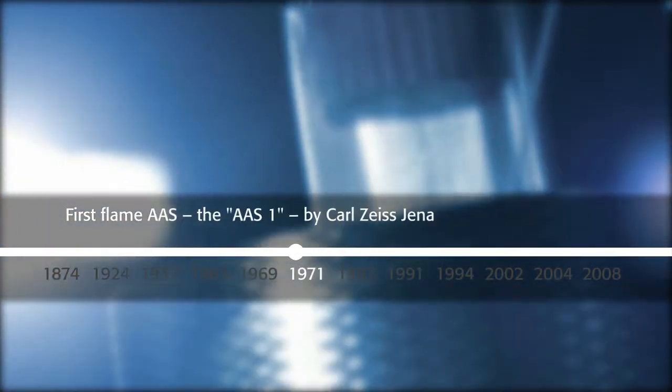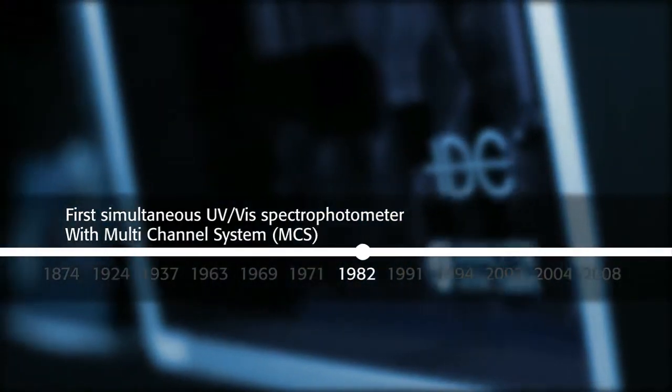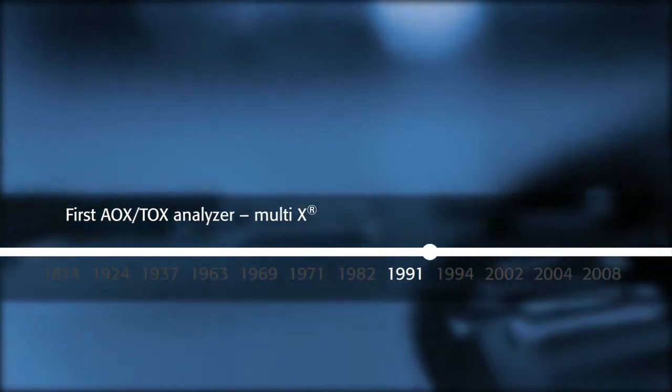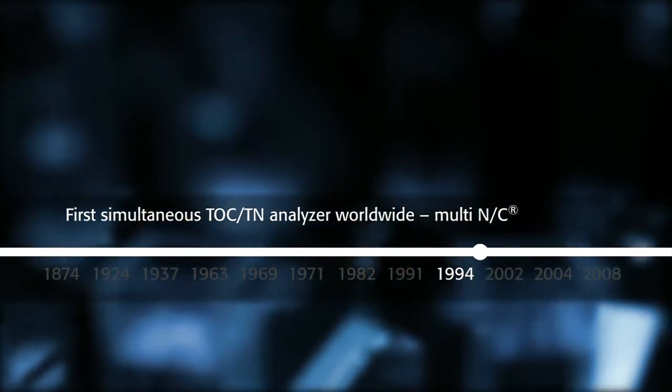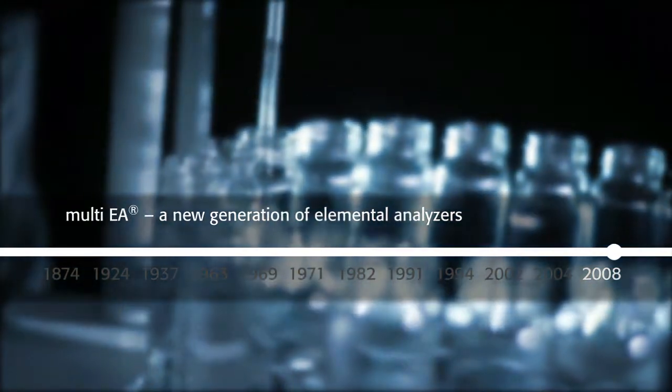Since then, important milestones in the field of optical spectroscopy and elemental analysis have been reached, which led to the successful introduction of novel generations of analytical instruments. It is due to these achievements that Analytik Jena has top market standing in manufacturing modern analytical instruments, in particular in optical spectroscopy.